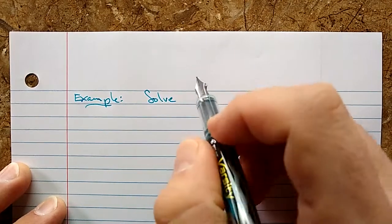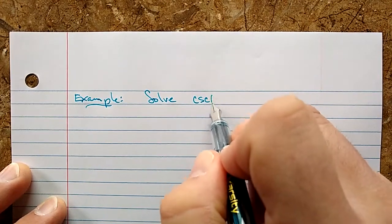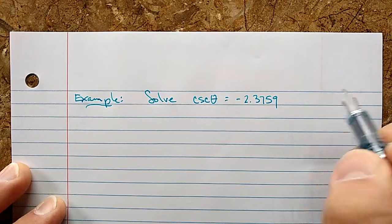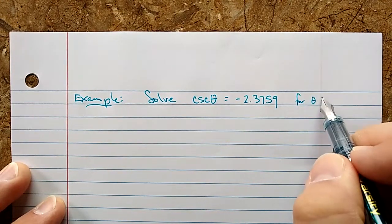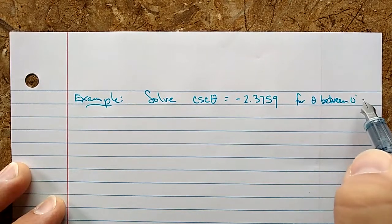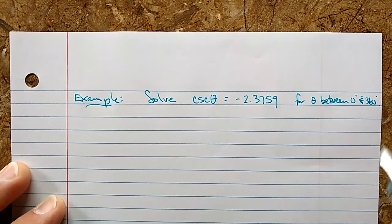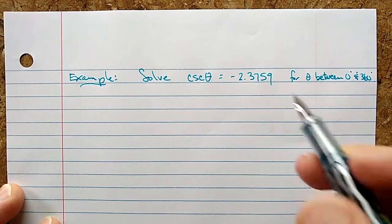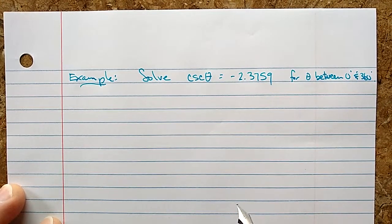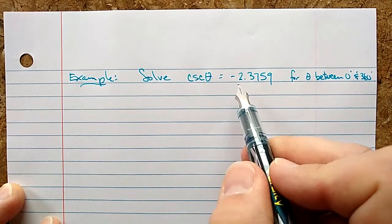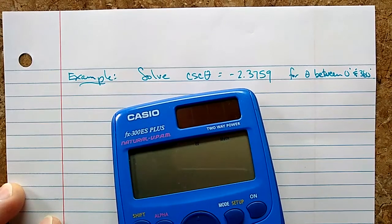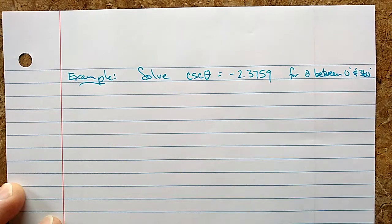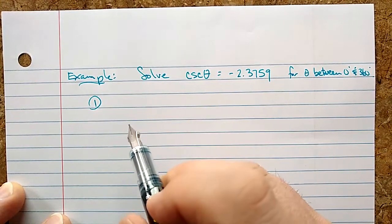And this time, let's try: Solve cosecant theta equals negative 2.359 for theta between zero and 360 degrees. Wait a second, the first problem is I don't have a cosecant inverse button on here. So I'm going to have to switch this into the primary trig ratio so I can use my calculator. So step one here is let's convert to a primary trig function.